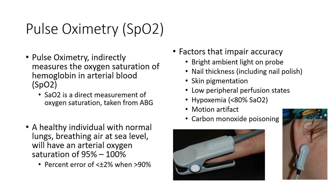Pulse oximetry is a way for us to indirectly assess the oxygen saturation of hemoglobin in arterial blood. At normal high concentrations — around 70 to 100 mmHg — oxygen is for the most part going to be bound to hemoglobin. When we start dipping below that, we have problems. We can make an indirect inference of arterial blood oxygen concentration by looking at how saturated hemoglobin is with oxygen. In a normal healthy individual breathing at sea level, saturation is going to be between 95 to 100%, with a plus or minus 2% margin.